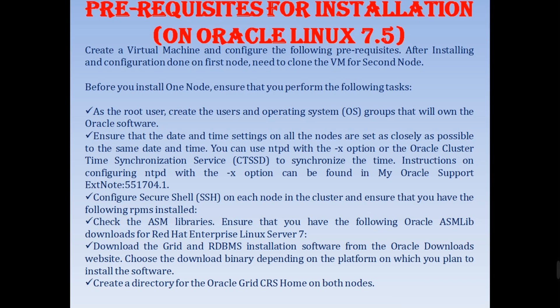Configure secure shell SSH on each node in the cluster. Ensure that you have Oracle ASM libraries installed — download Oracle ASM library from Oracle. For Enterprise Linux Server 7 or Oracle Linux 7.5, download the Grid and DB management software from the Oracle download website. Choose the download binary depending upon the platform on which you plan to install the software. Create a directory for the Oracle Grid CRS home on both nodes and proceed with the installation. These are the prerequisites for installation on Oracle Linux 7.5.